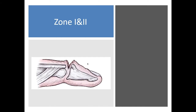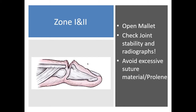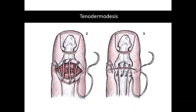With zone one injuries, injuries are often at the insertion of the extensor — essentially open mallet injuries. The important thing to remember is to check the radiographs, ensure the stability of the joint, make sure there's no volar subluxation, and that the collaterals are intact. Closed mallets are usually treated conservatively if the joint surfaces are congruent and gliding, but if you have an open injury you want to ensure the joint is washed out thoroughly, and try to avoid excessive suture material when repairing the tendon. Sometimes in zone one and two there is not enough tendon substance to suture, and one technique employed is a tenodermodesis, where the skin is taken with the tendon itself.